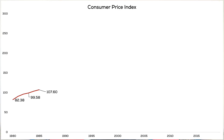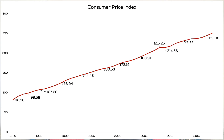Here is the consumer price index since 1980. We can see that the CPI is positively sloped, therefore we are experiencing inflation. But the growth rate is not consistent. Some years the slope is steeper, and others it's flatter. Steeper slope years are associated with high levels of inflation, while flatter growth is associated with lower inflation.